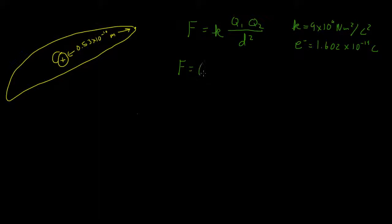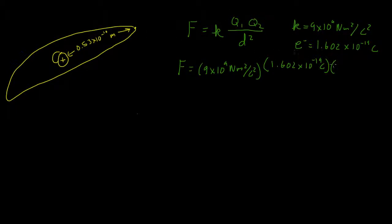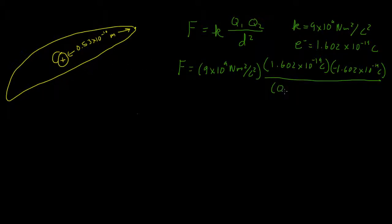So we'll just plug our numbers in. k is 9 times 10 to the 9th newton meters squared per coulomb squared. Q1, the proton, is positive 1.602 times 10 to the negative 19th coulombs. Q2, the electron, is negative 1.602 times 10 to the negative 19th coulombs. Then we divide by the distance squared, which is the radius of the atom: 0.53 times 10 to the negative 10 meters, squared.